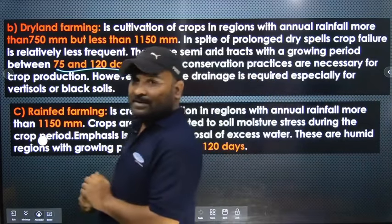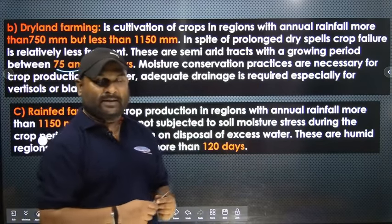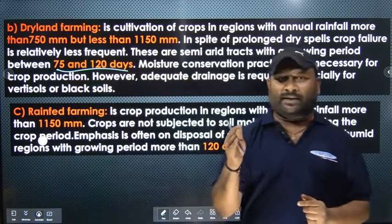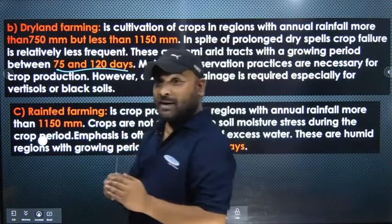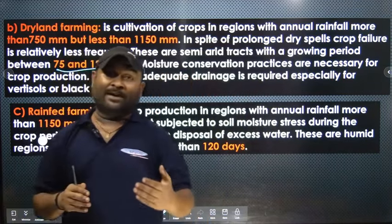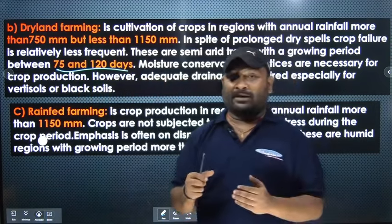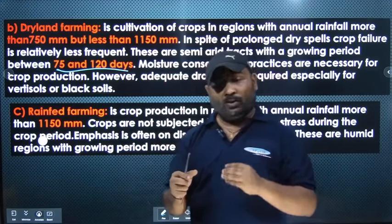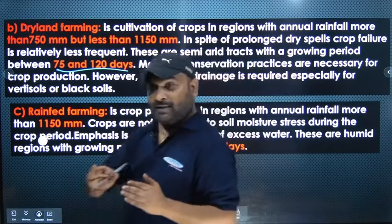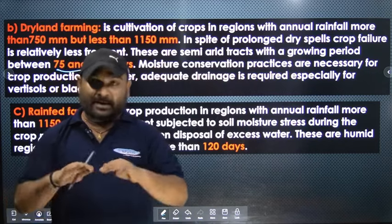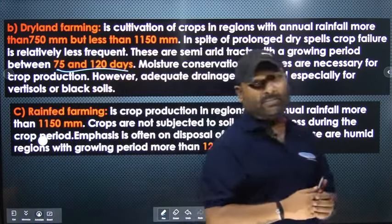Rain-fed farming is practiced in the humid region where annual rainfall is more than 1150 mm. There is no drought problem here; instead there is excess water. So we adopt a proper drainage system. There will be more water erosion. The growing season is more than 120 days.